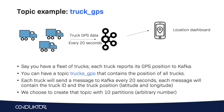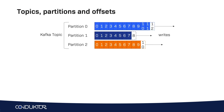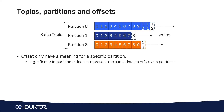Consumer applications could be a location dashboard for a mobile application, or a notification service — for example, in case a truck hasn't been moving for more than 10 minutes, maybe it's broken, or maybe a truck has arrived at its destination and we want to send a notification. So let's go back to our topics, partitions and offsets. If we look at the offsets, they only have a meaning for a specific partition — offset number three in partition zero does not represent the same data or the same message as offset number three in partition one.